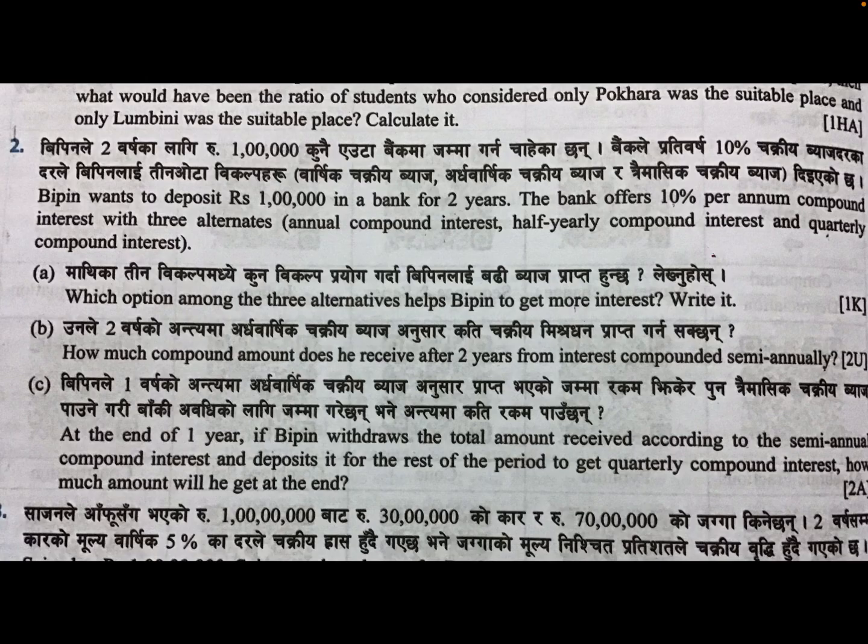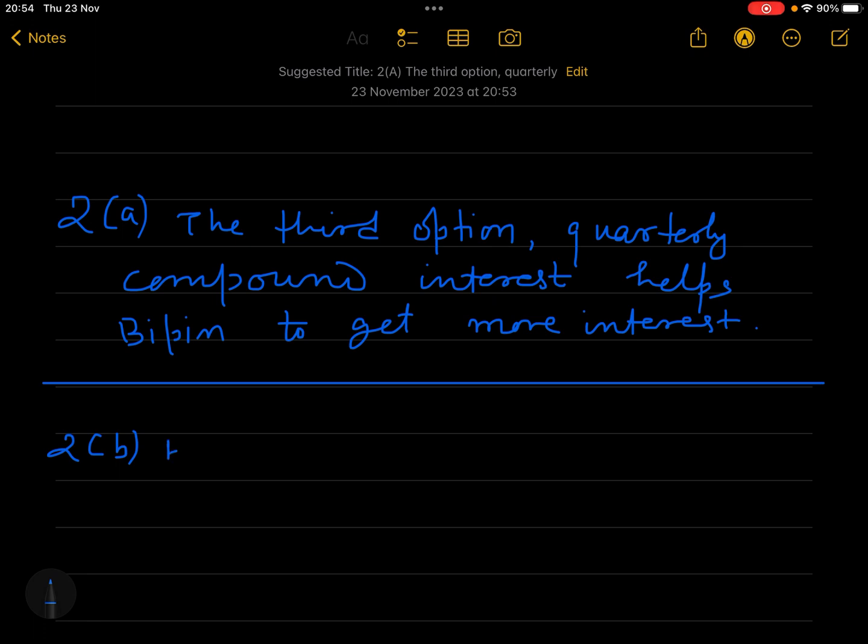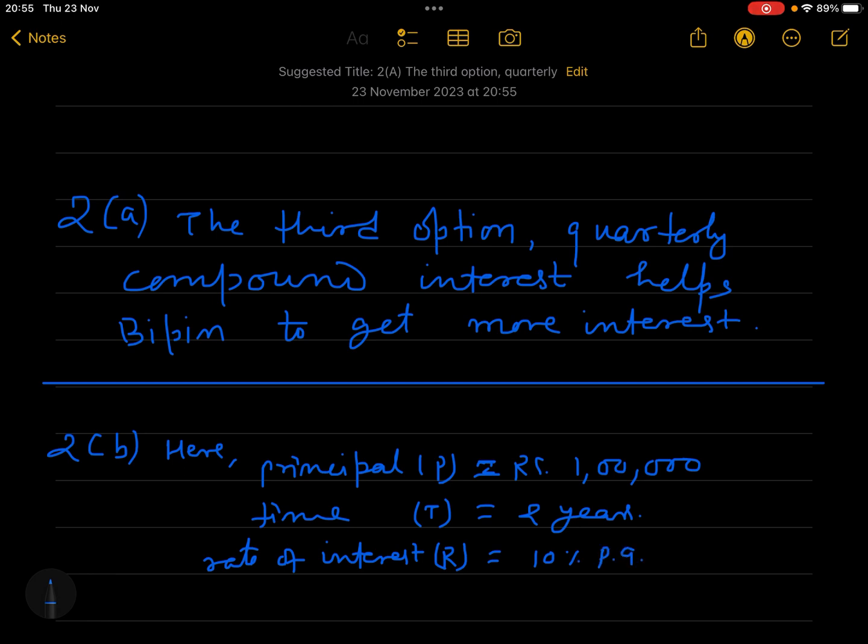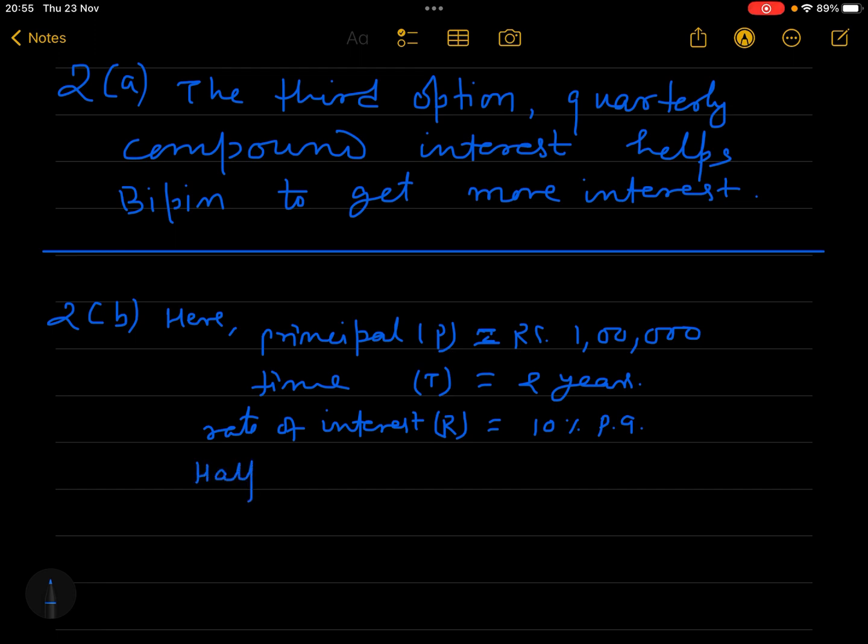So we have to calculate semi-annual compound interest. Let us write down the answer now. Here, principle P is equal to rupees 1,00,000. Time T is equal to two years. Rate of interest R is equal to 10 percent per annum. Now we need to calculate half yearly compound amount.